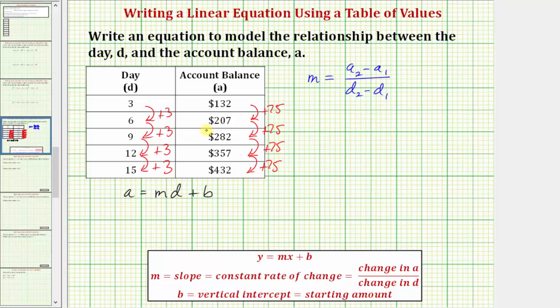So now using our table, we'll write two ordered pairs to use this formula to find the slope. Using the first row, we could use the ordered pair (3, 132), and using the second row, we could use the ordered pair (6, 207).